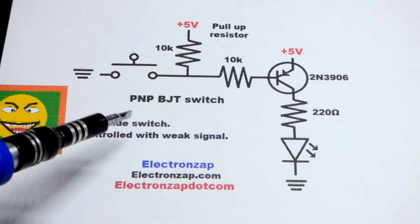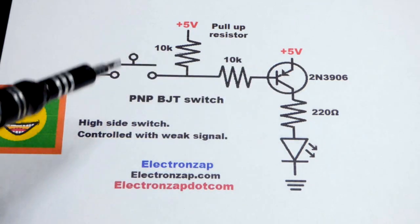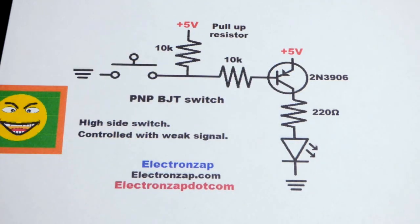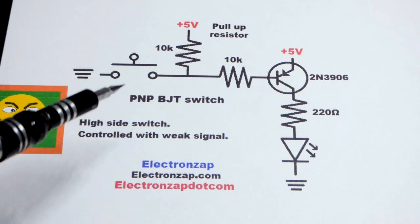So now in this video we're going to look at the PNP bipolar junction transistor switch. I'm doing more of just a basic circuit than I did with the NPN bipolar junction transistor where we use the output of a 555 timer.